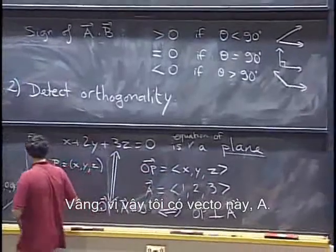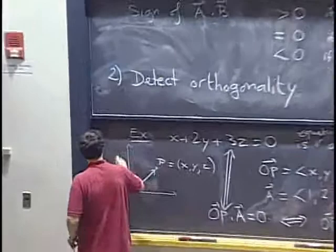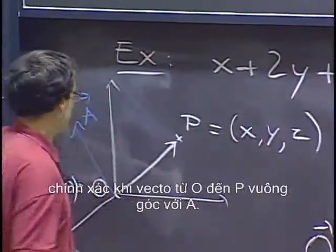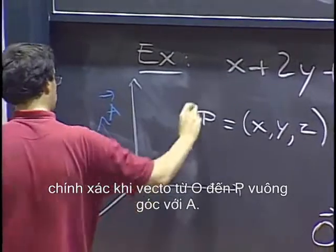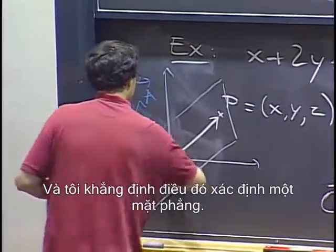So I have this vector A. I'm not going to bother to draw it realistically. Let's say it goes, for example, this way. Then a point P solves this equation exactly when the vector from O to P is perpendicular to A. And I claim that defines a plane.